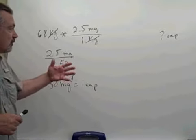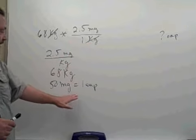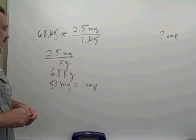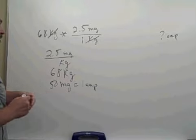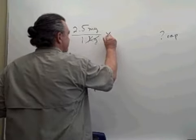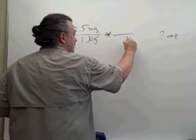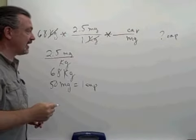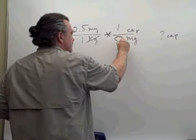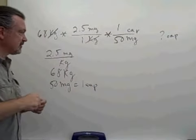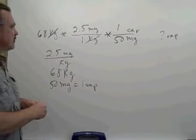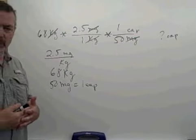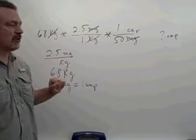Now we can convert that total milligrams to capsules by looking again at the information from the label. One capsule contains 50 milligrams of the drug. So we want the milligrams of the drug to cancel. We want to have capsules left. One capsule contains 50 milligrams. So now the milligrams cancels just as we want it to.